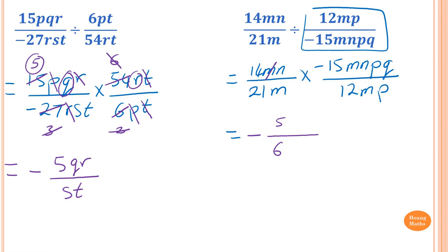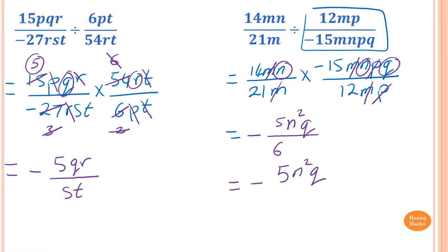Now cancel pronumerals: m cancels with m, another m cancels, and p cancels with p. What remains is n times n, which is n squared, and q. So the answer is negative 5n²q over 6.